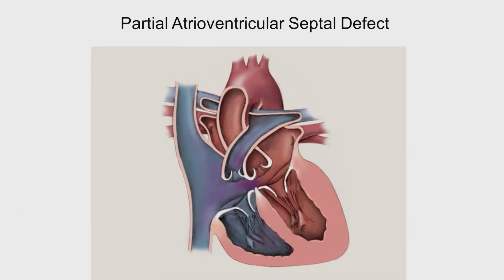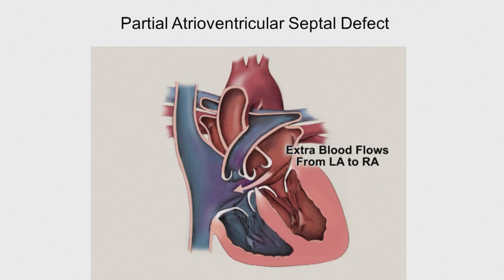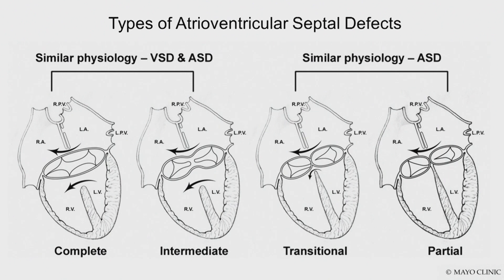Partial atrioventricular septal defect has just an atrial septal defect, with the ventricular area intact, and blood goes from the left atrium to the right atrium. On the left side, the mitral valve usually has a leak. There is a whole spectrum: on the far left, the complete type has a hole above and below with one big valve; on the far right, the partial type has an intact ventricular area with two separate valves — a mitral and a tricuspid — and the hole is at the atrial level. About three quarters are complete canals and about a quarter are partial.